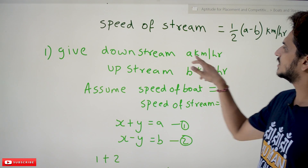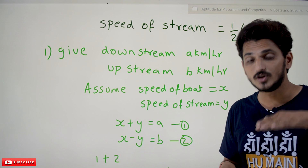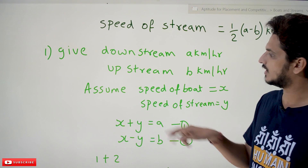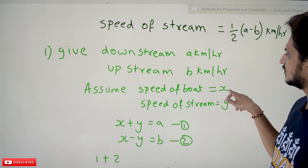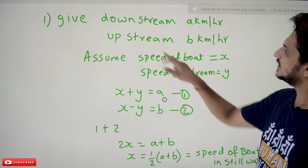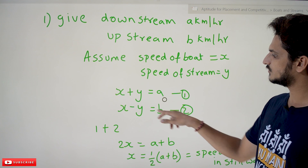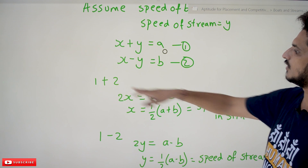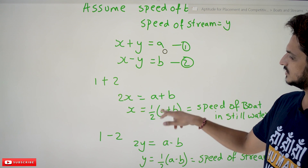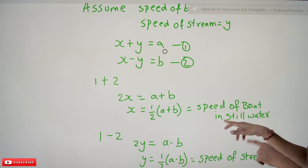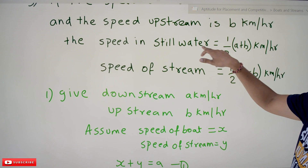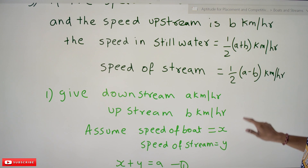Given downstream is a kilometers per hour — downstream means speed of the boat plus speed of the water. Assume speed of the boat is x and speed of the stream is y, so x plus y equals a. Upstream is b kilometers per hour, so x minus y equals b. Adding these two equations: 2x equals a plus b, therefore x equals half of (a plus b). Since x is the speed of the boat in still water, this gives us the formula shown above.